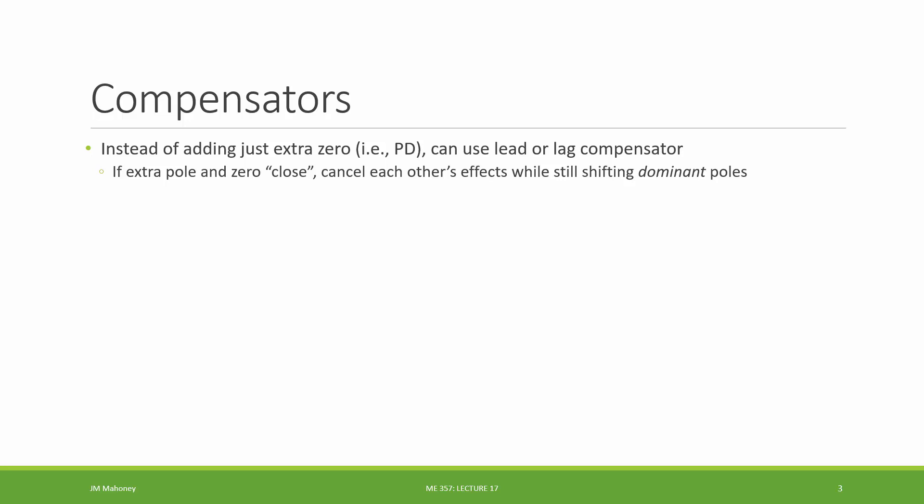So one option we have is a more advanced controller using a lead compensator or a lag compensator. What we're going to see is that with a lead or lag compensator, we can add an extra zero and an extra pole into our closed loop system. And by making the right selection or a good selection of the extra zero and extra pole, they may cancel each other's effects, yet still drive us towards the performance that we desire.